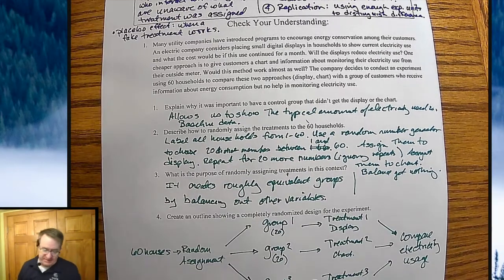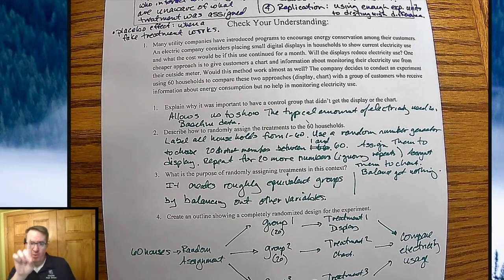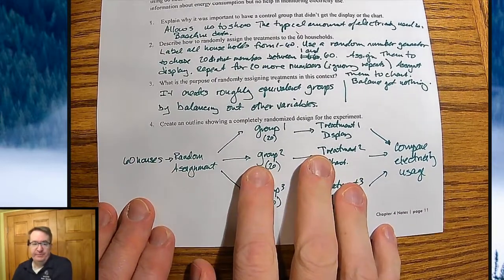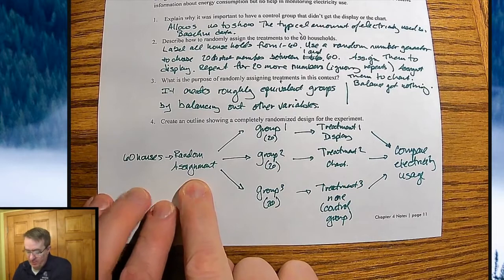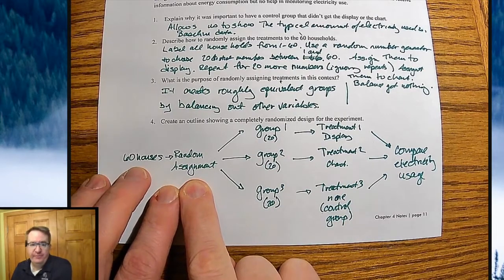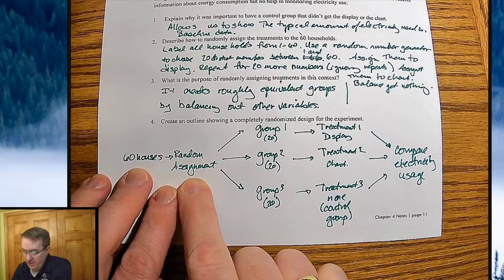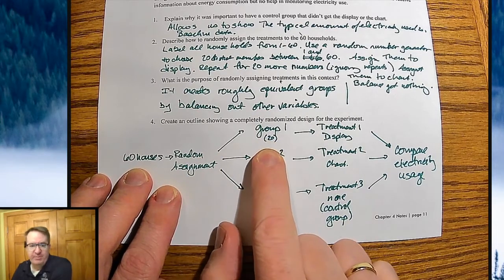Now for the outline, this is going to be probably, if you're going to remember one thing, this is going to be one of the big ones. You're going to take these 60 houses and you're going to say, okay, we're going to randomly assign them. And by saying random assignment, it's assumed it's an SRS for the most part. And you're going to say I'm going to have group one of 20 people, group two of 20 households, group three of 20 households.